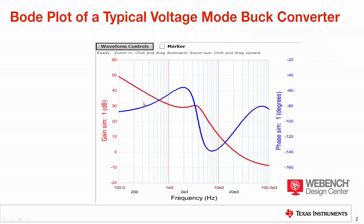If I look at my Bode plot over here — we should be familiar with these Bode plots by now — the red trace is the gain plot and the blue trace is the phase plot. I draw a line to the point where my gain plot crosses the 0 dB axis.